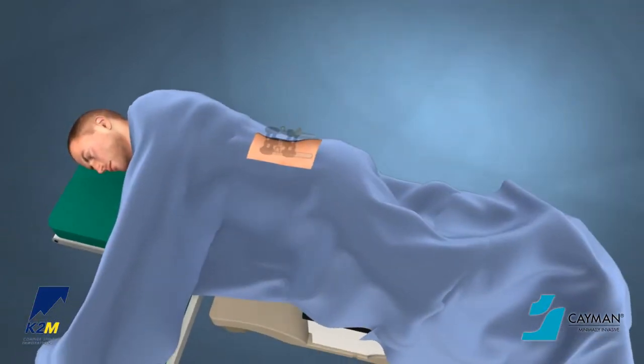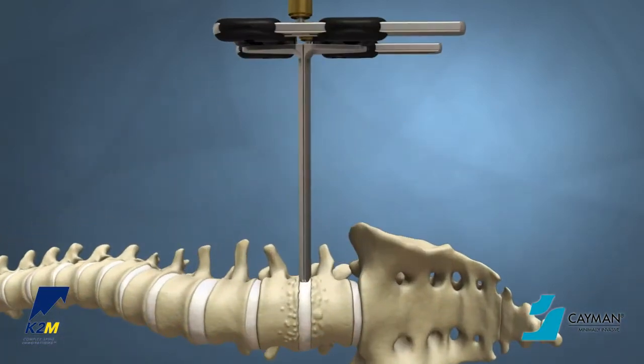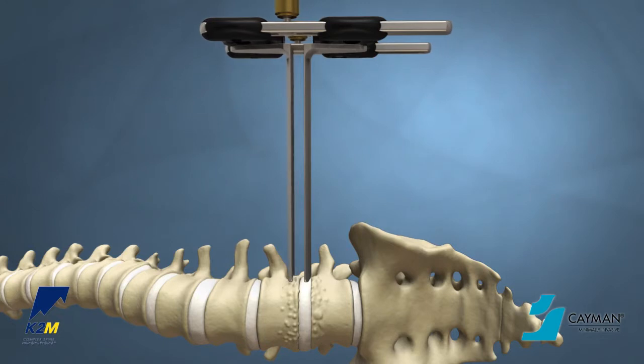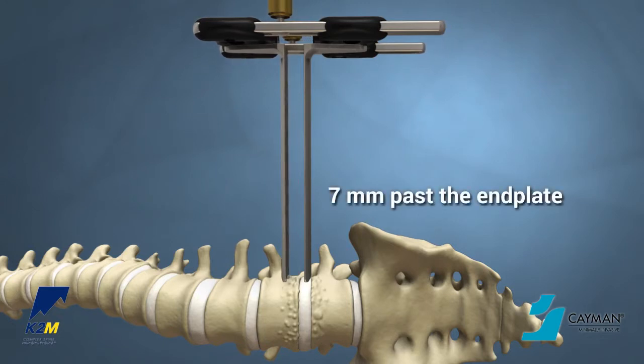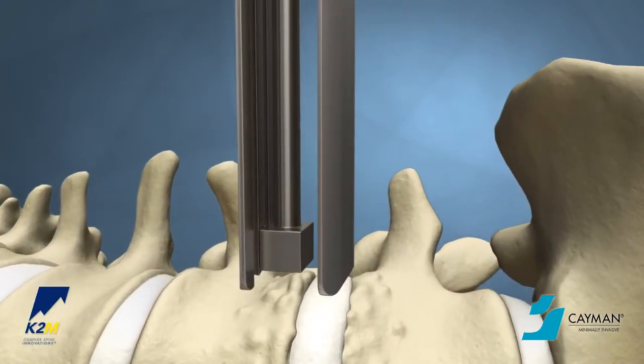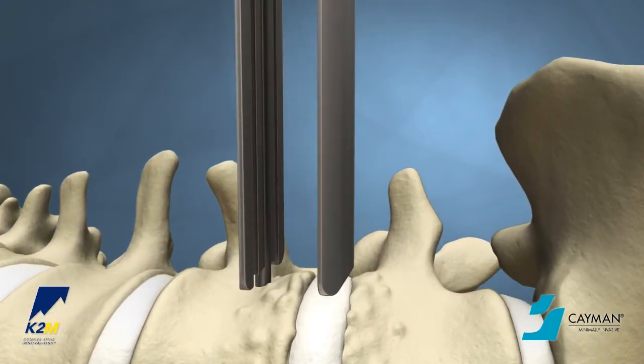Place the patient in a lateral decubitus position to begin the Ravine procedure. In order to streamline the Cayman MI procedure, it is important to note that the retractor blades should be initially placed 7 mm past the end plates. An offset guide can be used to ensure adequate space for the plate.